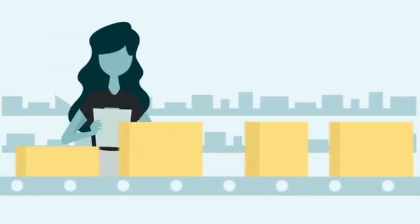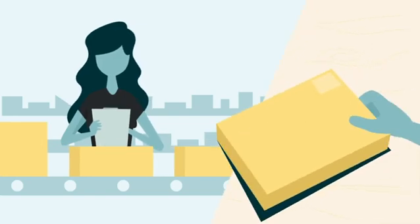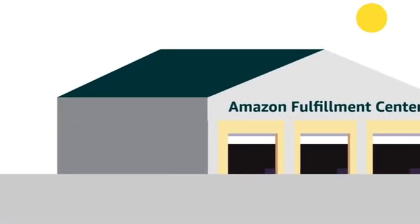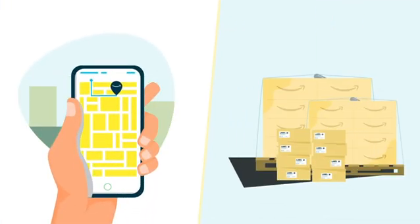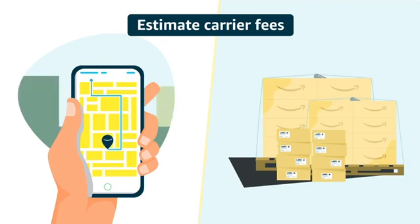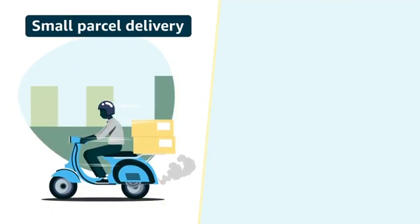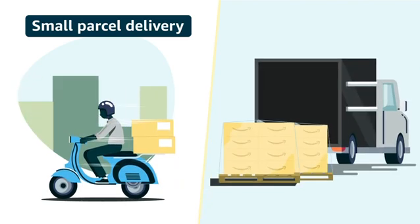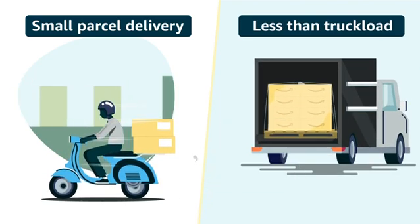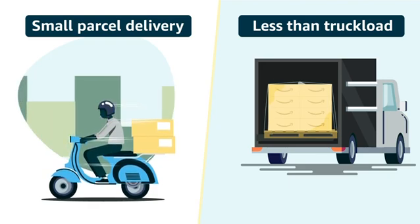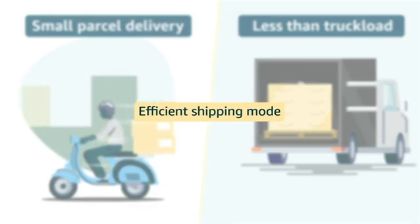Once you have provided box content information, we determine where each box has to be shipped, ensuring that your inventory is placed in close proximity to customers. Based on shipping destinations and boxes, we estimate carrier fees to ship your inventory as individual boxes using small parcel delivery or SPD, or as pallets using less than truckload or LTL options. This enables you to make a well-informed decision regarding the shipping mode that works for you.